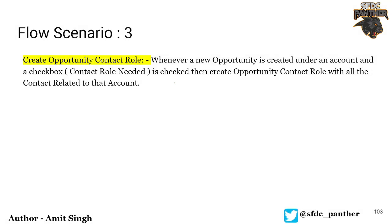In this video, the scenario we are going to tackle is: we need to create opportunity contact roles under each opportunity whenever the opportunity is created under an account, and there is a checkbox field called 'Contact Role Needed'. If this is checked, we will find all the contacts related to that account and associate those contacts as a contact role under the opportunity. The object name is Opportunity Contact Role — basically a junction object between the opportunity and the contact.